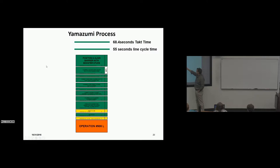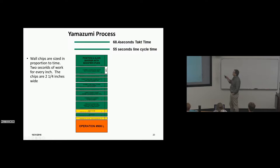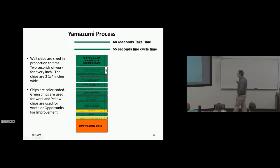So here's a wall chip. Wall chip tells us this is operation 986 and here's all the things that they do and here's non-value added elements that are in yellow. Here's option content on one of the elements. Notice at the top that you have 55 second line cycle time, 68.4 second takt time. So how efficient is this process? It's relatively close to the 55 seconds, but quite a ways away from the takt rate. But of course, you can't exceed, you can't load this job up towards 68.4 seconds because the car is going to go by the person. Wall chips are sized in proportion to the time, two seconds of work for every inch. The chips are two and a quarter inches wide. So we can see, relatively speaking, how much time it takes for each element, just visually.